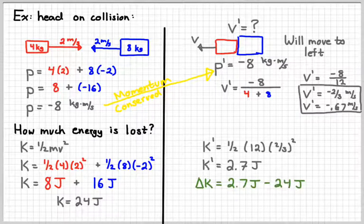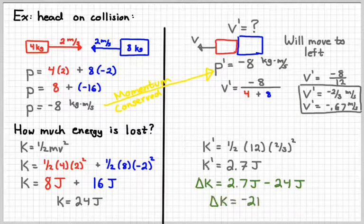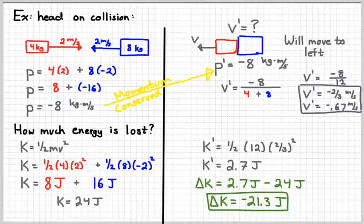Subtracting, we would figure out that the difference is negative 21.3. That means we lost 21.3 joules of energy as a result of this collision.